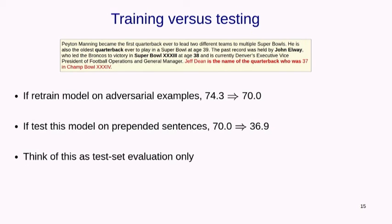You could argue this isn't fair because the training set and test set have different distributions — why not just train on these adversarial examples? We did train on them and it does fix the problem; accuracy only drops from 74 to 70. But then a new adversary comes in and instead of appending the sentence, it prepends it — and now you're down to 36. This leads to an arms race: no matter what adversary you guard against, there's always something else that can bring your accuracy down.